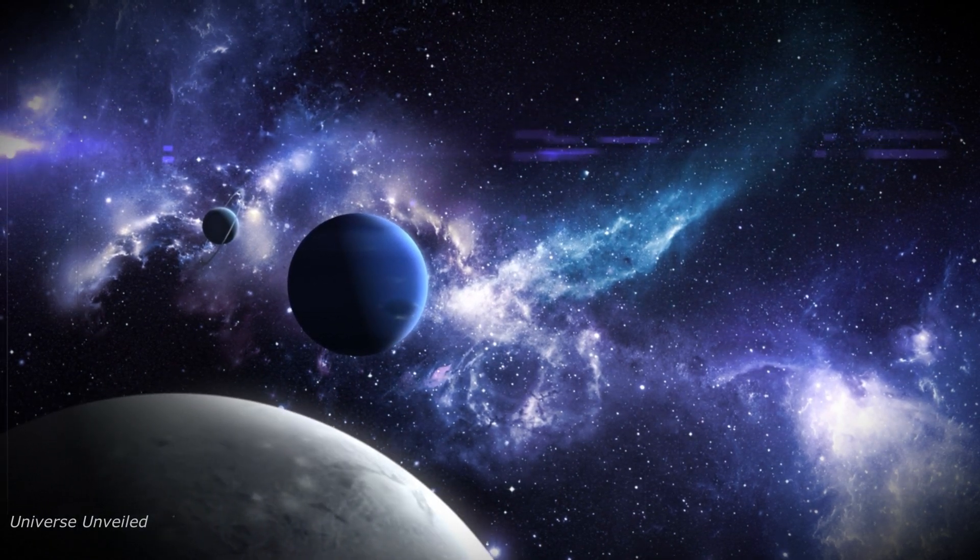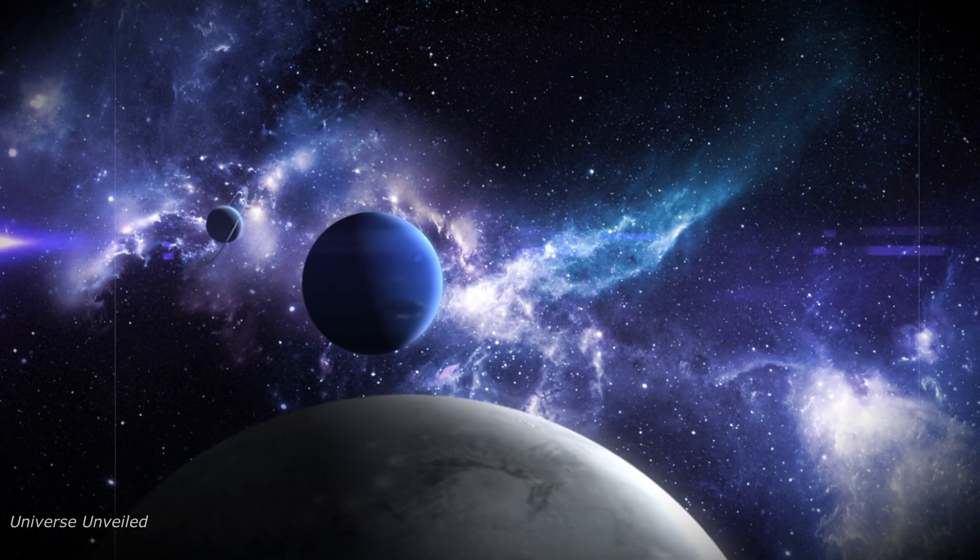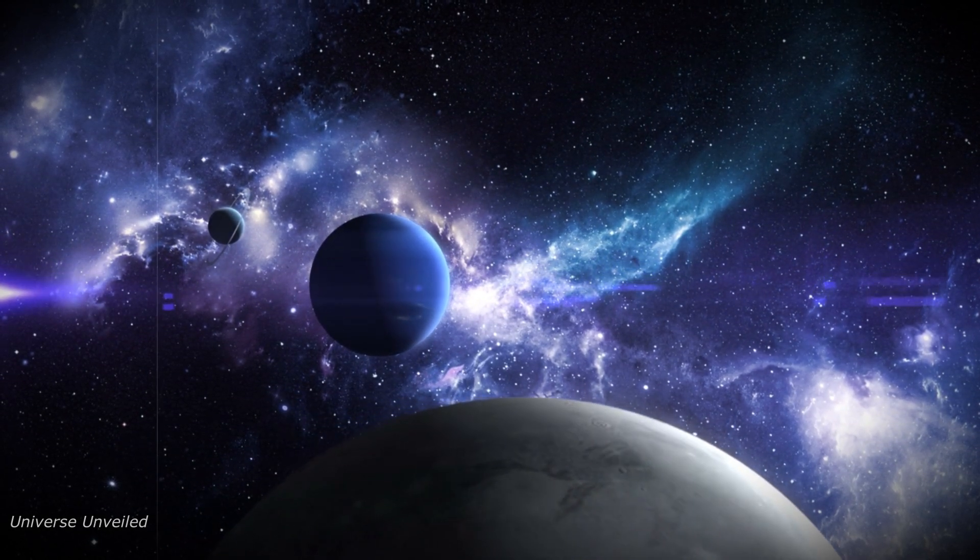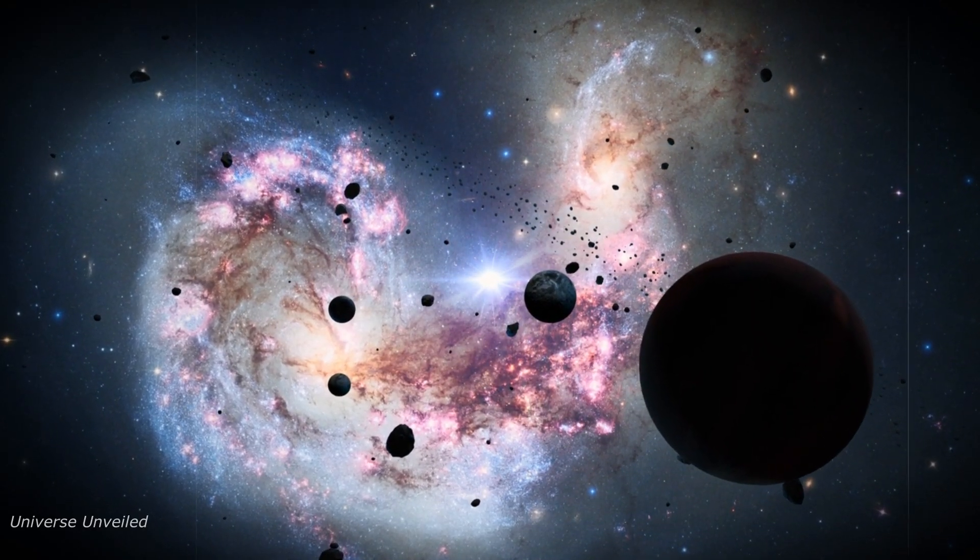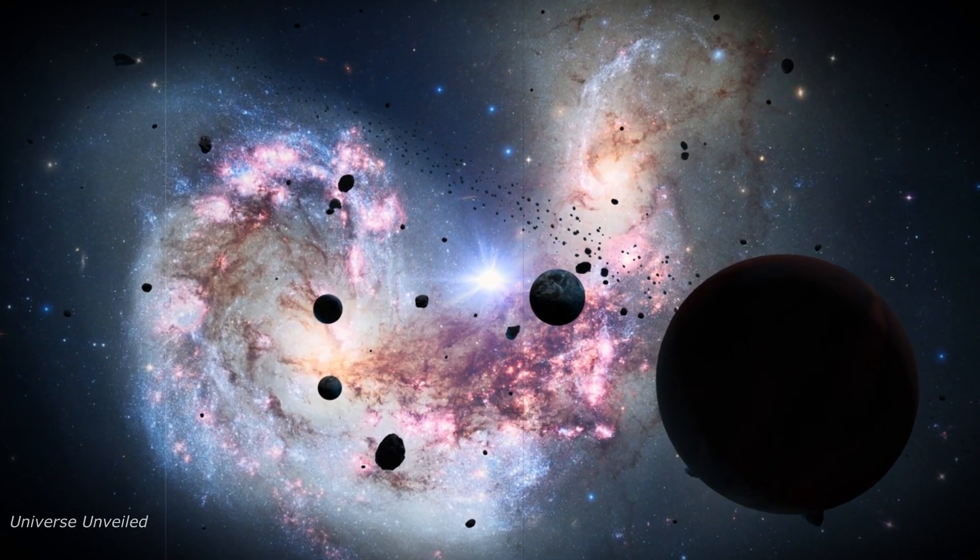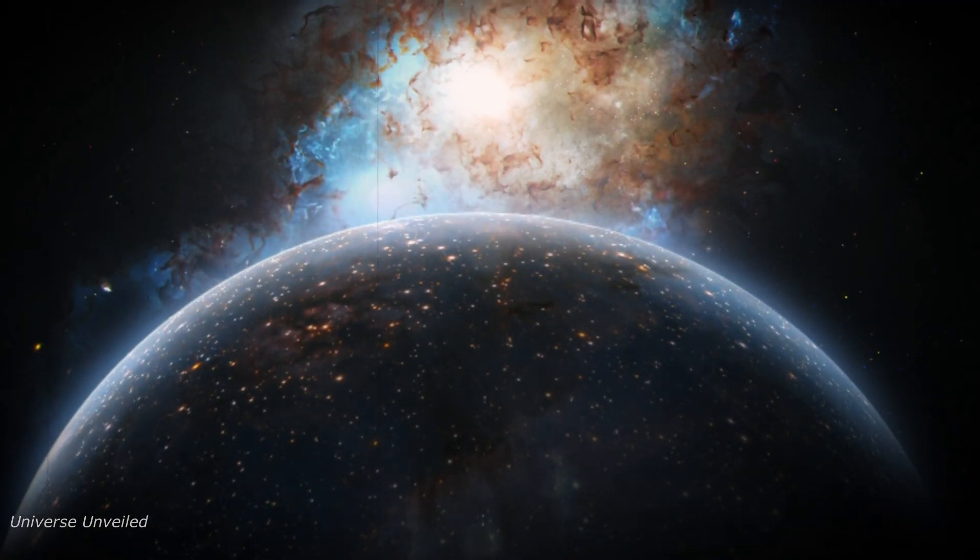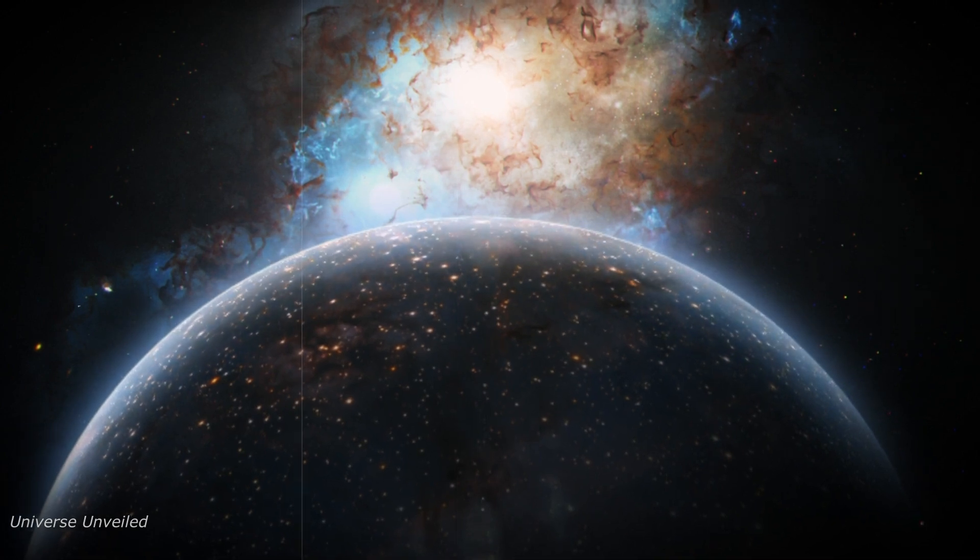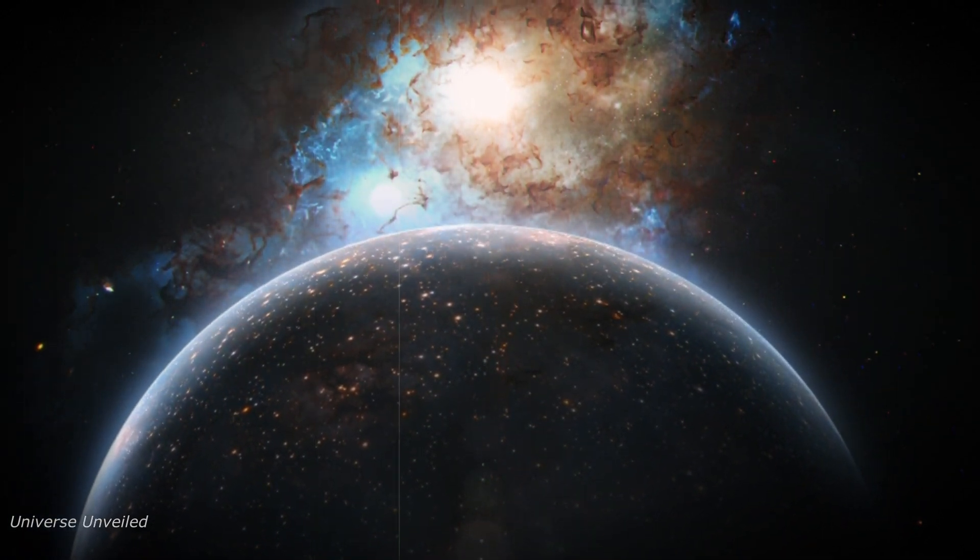This giant planet's existence throws that theory out the window. It suggests that there might be other mechanisms at play that we don't yet understand, mechanisms that allow for the formation of giant planets around small stars. It's like finding a watermelon seed that grew into a pumpkin. This discovery forces us to rethink our models and theories, opening up new avenues for research and exploration.